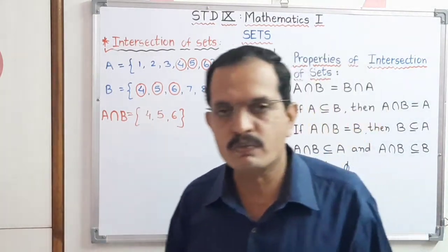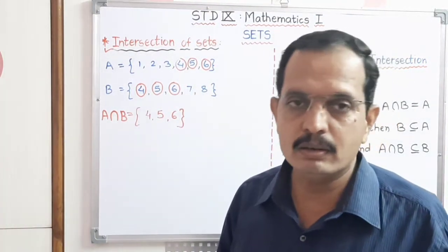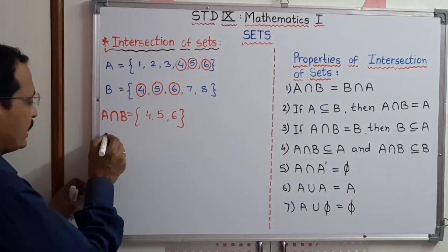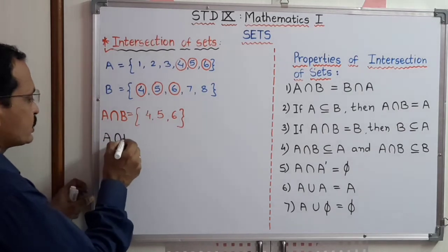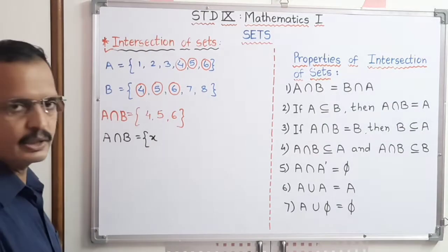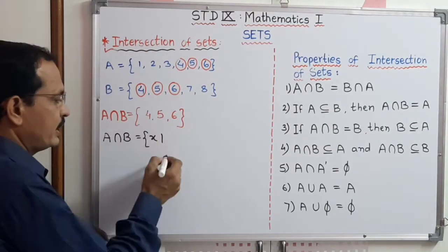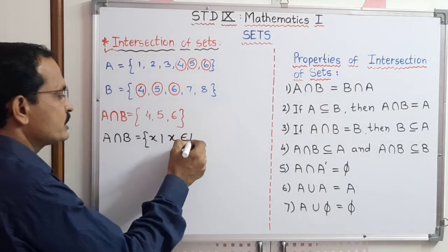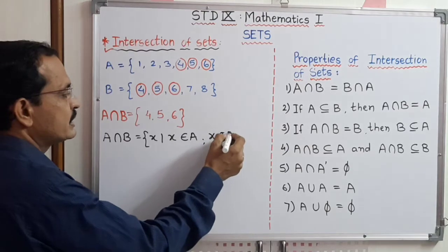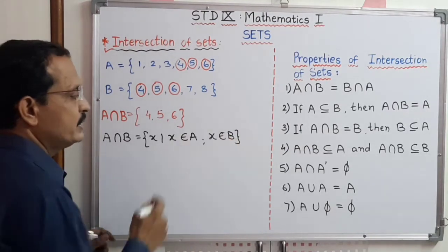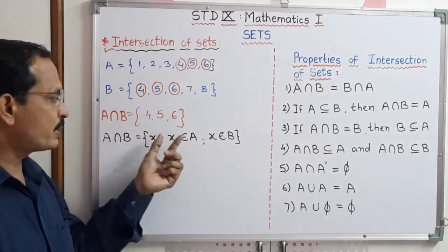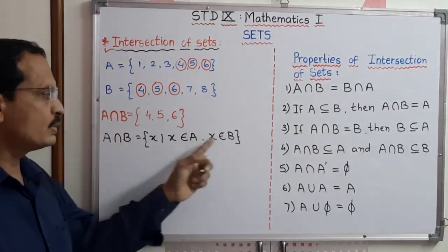If we have to write the intersection set using the rule method, we can write: A intersection B is the set of X such that X belongs to set A as well as X belongs to set B. That means the element of the intersection of two sets belongs to set A as well as belongs to set B.